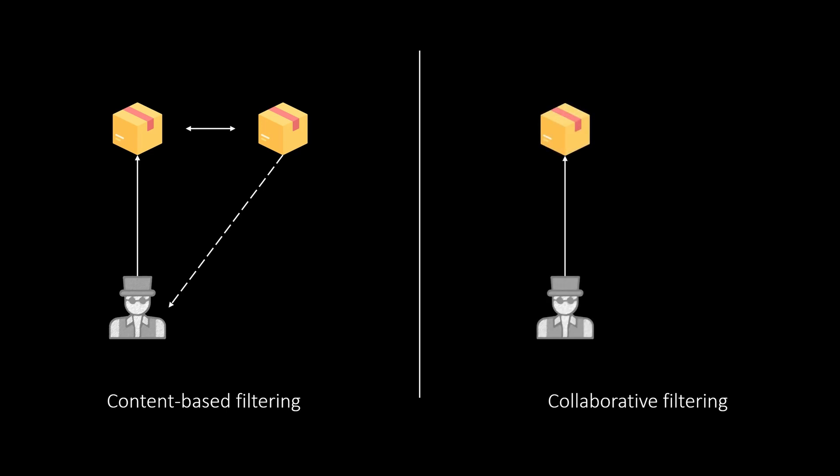Collaborative filtering on the other hand uses the similarities between the users to filter out elements that can be recommended. The basic idea is that users with similar purchase history will also like similar things.